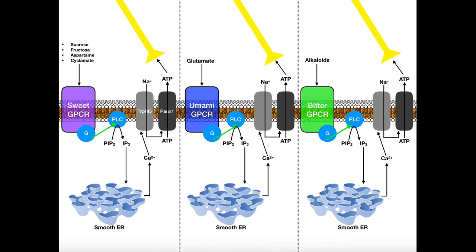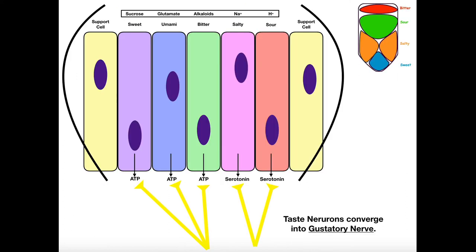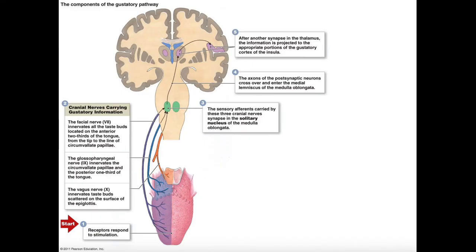Before we go to the last slide, there's actually thought to be another taste sense — the sense of fat. Humans actually like the taste of fatty acids, and it's thought that fatty acids represent another type of sense, activating a receptor called CD36. This isn't super well understood, so I won't go into detail here, but understand that there is another sense for fat, and humans like it.